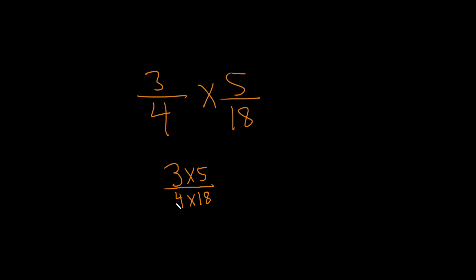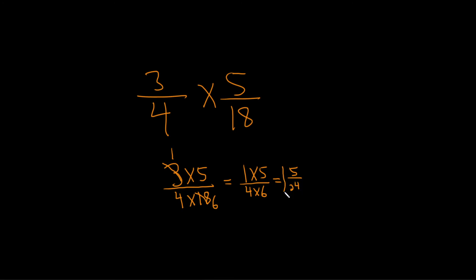Now we can look to see if anything cancels. You'll notice that 3 goes into 3 one time, and it goes into 18 six times. So this is really 1 times 5 over 4 times 6. 1 times 5 is 5, and 4 times 6 is 24. So that's one way to do it.